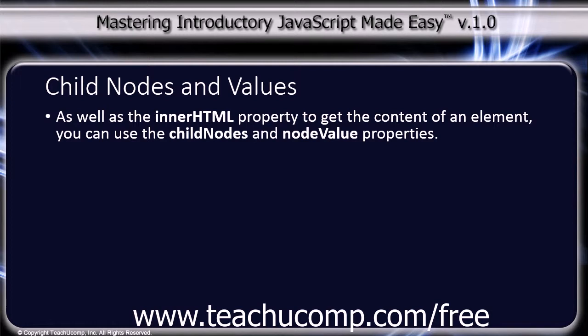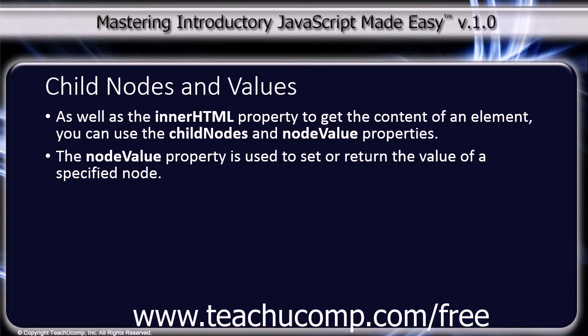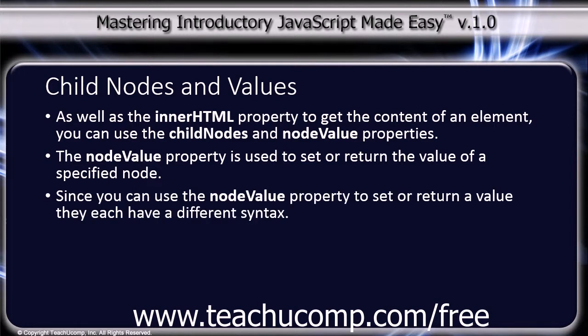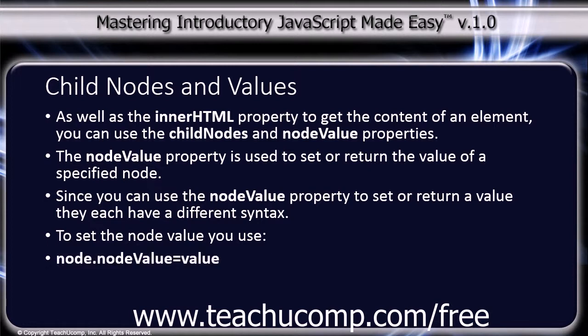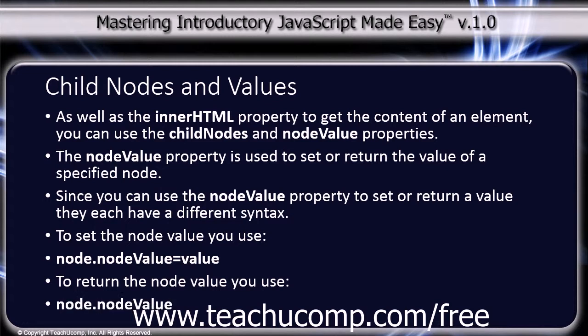As well as using the innerHTML property to get the content of an element, you can use the childNodes and nodeValue properties. The nodeValue property is used to set or return the value of a specified node. Since you can use it to both set and return a value, they each have a different syntax. To set the node value, you use node.nodeValue = value, thus assigning a value to a node. To return the node value, you would use node.nodeValue.